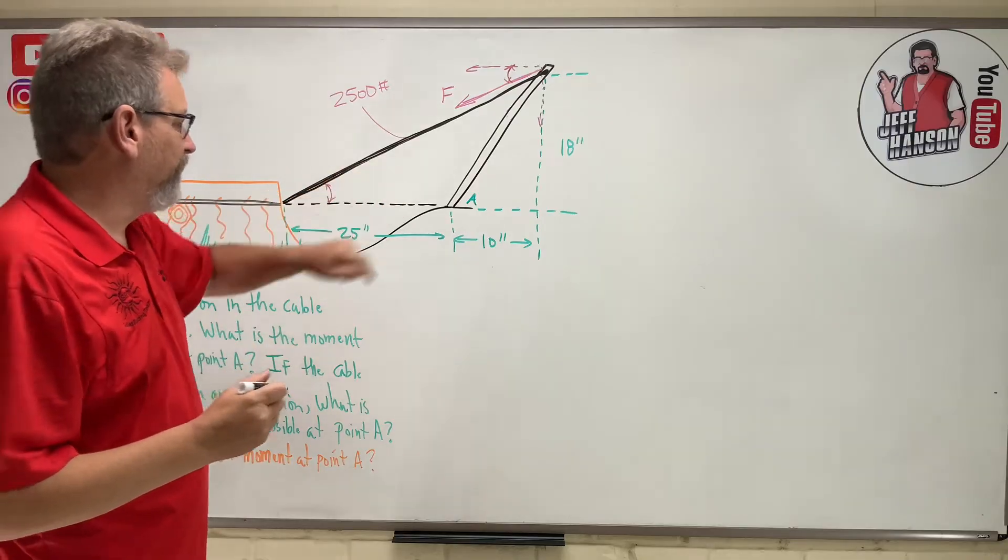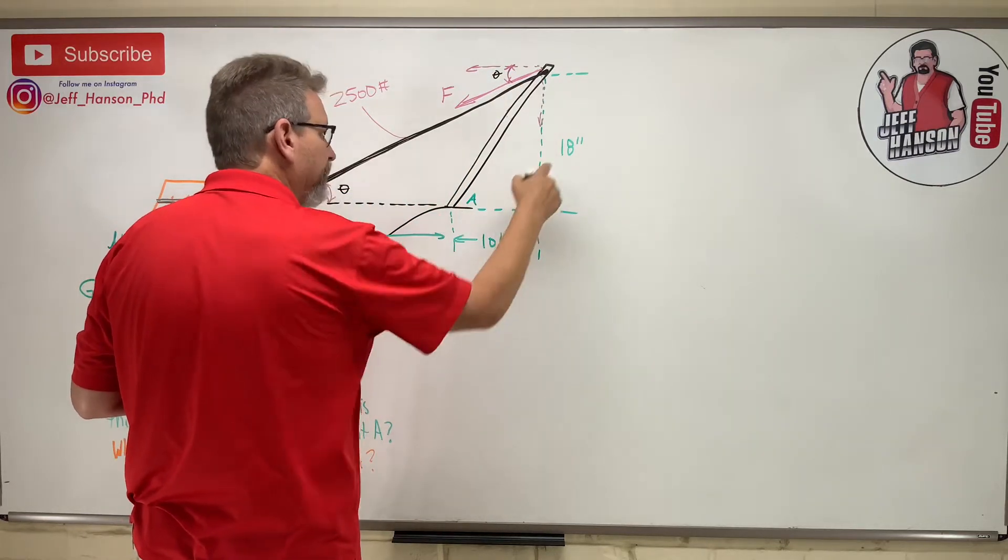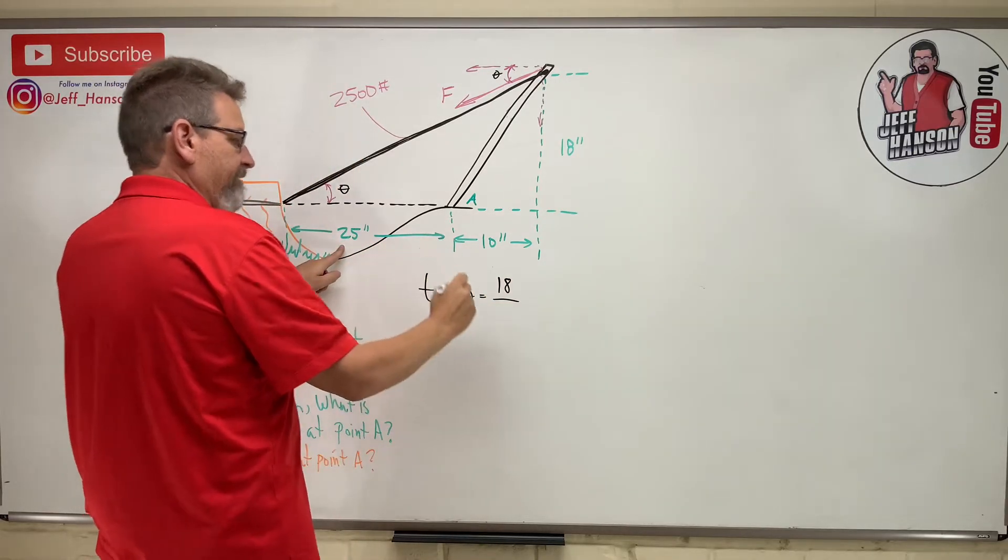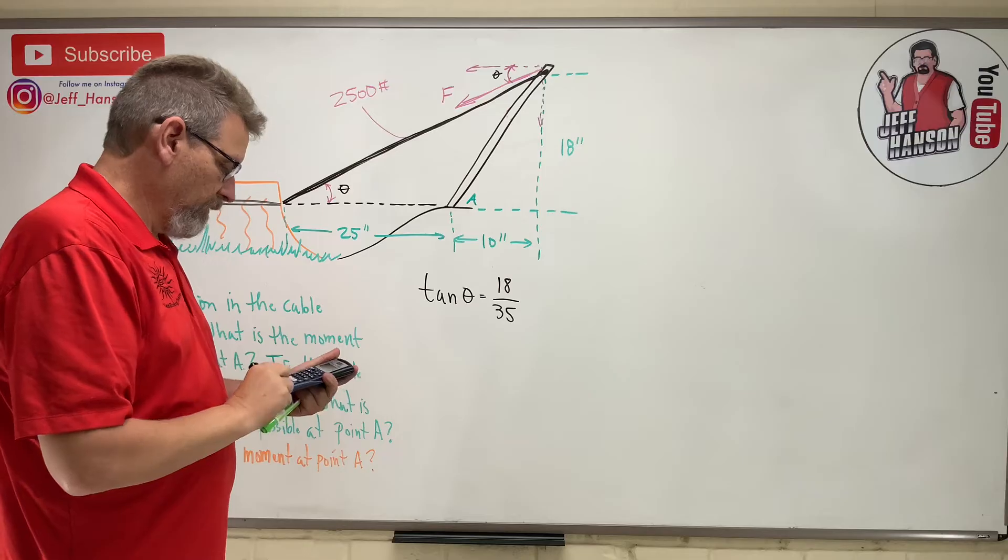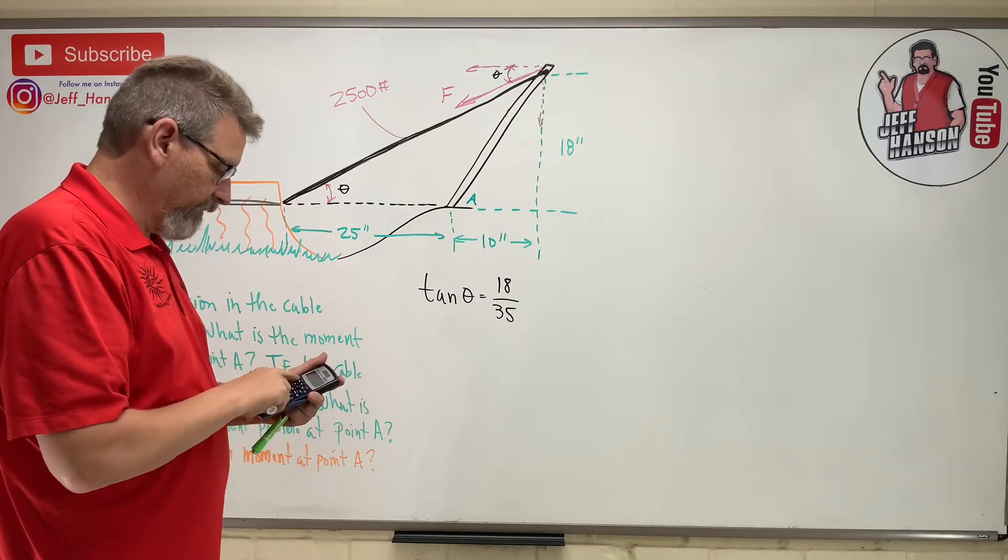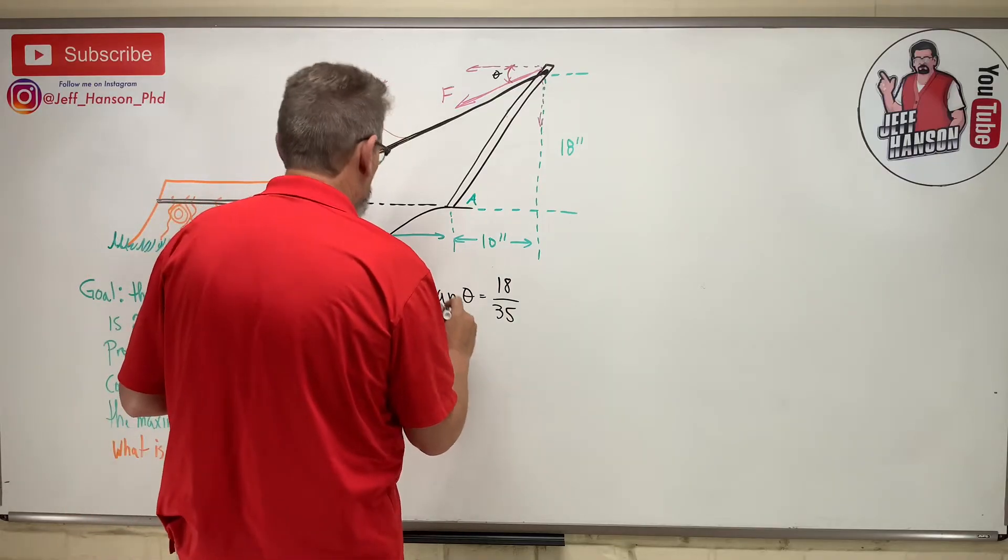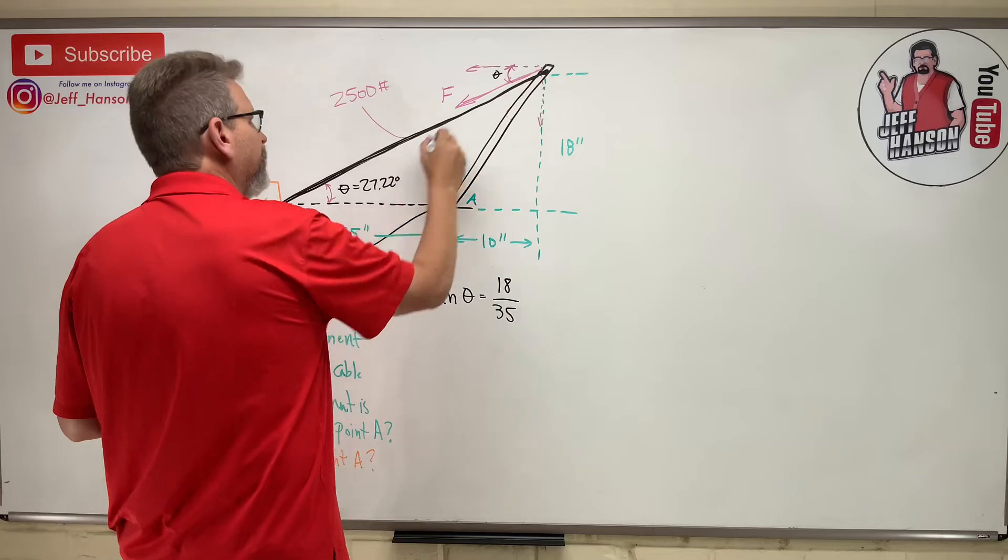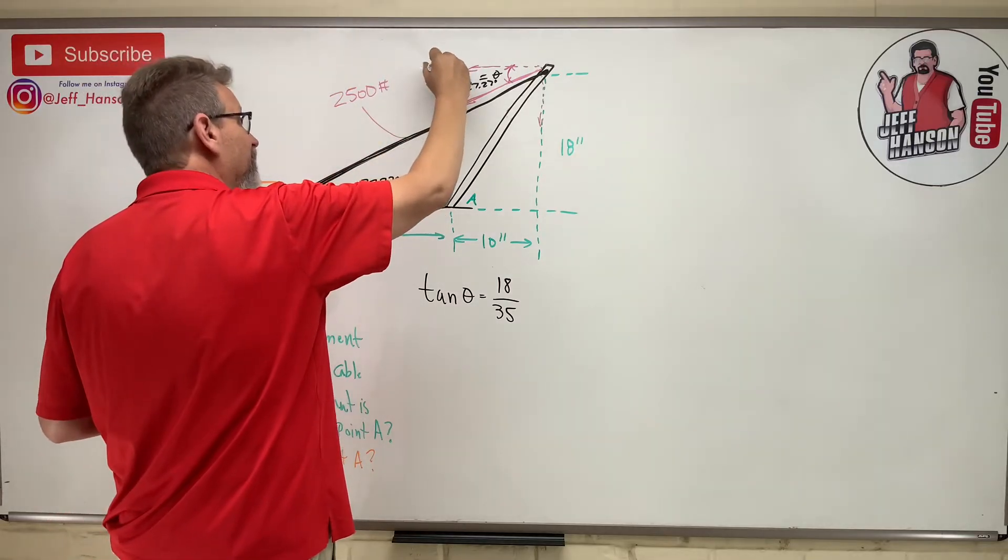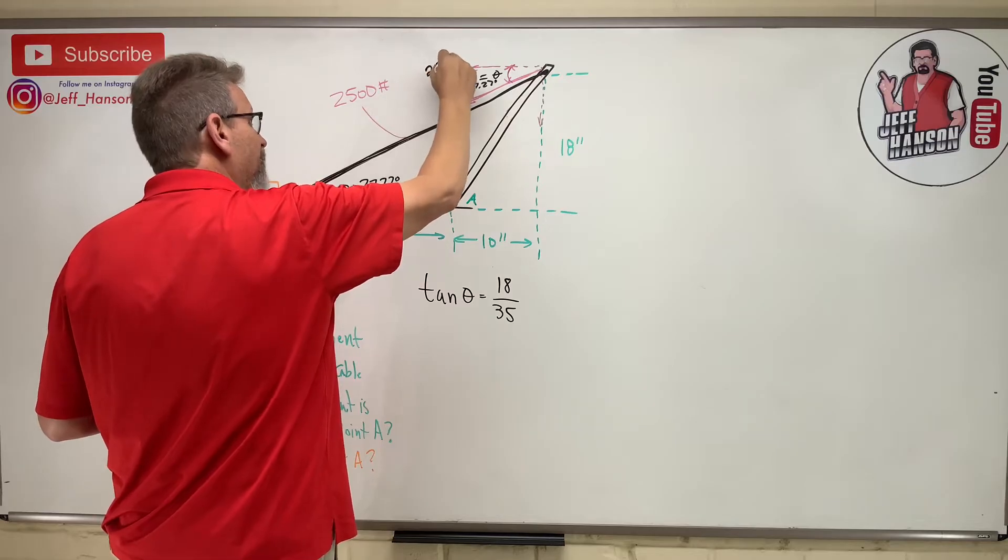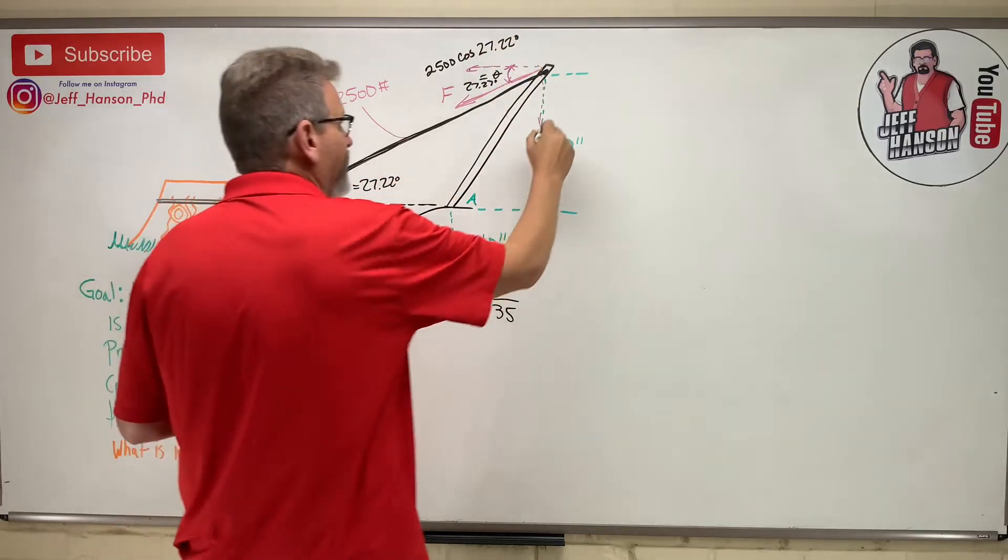If I do opposite over adjacent, so tan, we'll call this guy theta and this guy theta. Tan theta is equal to opposite, which is 18, over adjacent, which is 35. And then let's see what that is. 18 divided by 35 equals, and then inverse tan of that is, drumroll please, 27.22. So this is 27.22 degrees, this up here is 27.22 degrees. That would make this guy right here, this guy would be 2500 cosine of 27.22 degrees, and that would make this component 2500 sine 27.22 degrees.